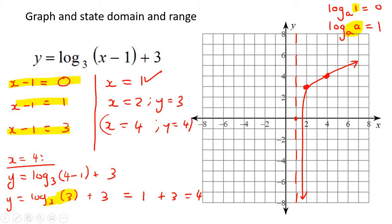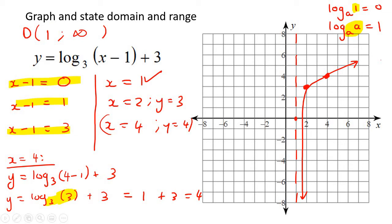Let's do domain and range. For the domain — that's the x values — the graph can never go past x equals 1. But looking at the arrow, it will keep going to infinity. So it goes from 1 up to infinity; it never touches 1 because it's an asymptote, so we use a round bracket. For the range, it can go all the way down to negative infinity and all the way up to positive infinity.